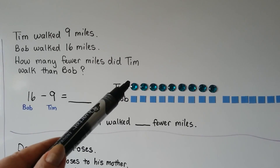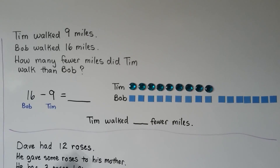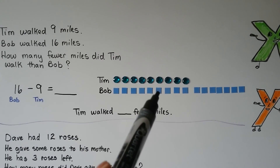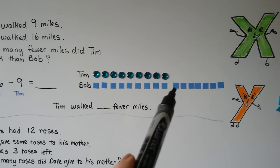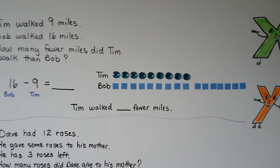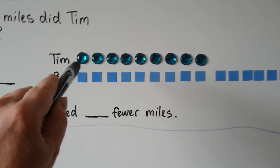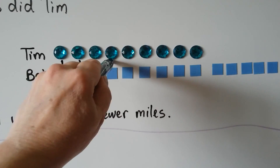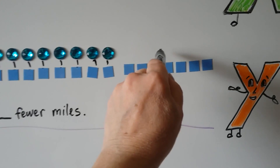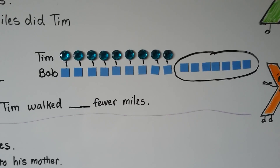We can give Tim 9 counters: 1, 2, 3, 4, 5, 6, 7, 8, 9. We can give Bob 16 counters: 1 through 16. We can compare the counters that Tim has to the ones Bob has. You can see that these all match each other — the same number. And Bob has this many more than Tim, which means Tim has that many fewer. How many counters are there? 1, 2, 3, 4, 5, 6, 7.